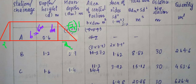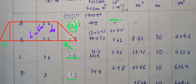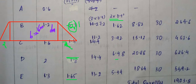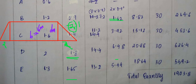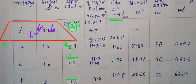Calculating side slope areas: For A-B: 2 × (0.9)² = 2 × 0.81 = 1.62 m². For B-C: 2 × (1.4)² = 2 × 1.96 = 3.92 m². For C-D: 2 × (1.8)² = 2 × 3.24 = 6.48 m². For D-E: 2 × (1.65)² = 2 × 2.7225 = 5.44 m².